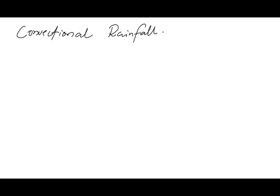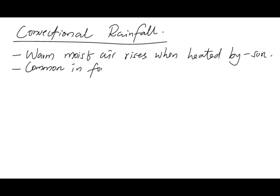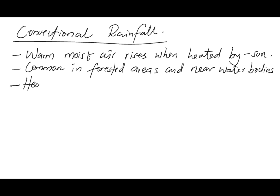Let's look into convectional rainfall. From the word convection, this takes place when warm moist air rises in the form of convection currents. Where and why does it take place? The heat from the Sun heats the air above the ground; when heated, the air becomes less dense and starts to rise. This type of rainfall happens especially in forested areas and also near water bodies — the reason being to provide moisture into the rising air.